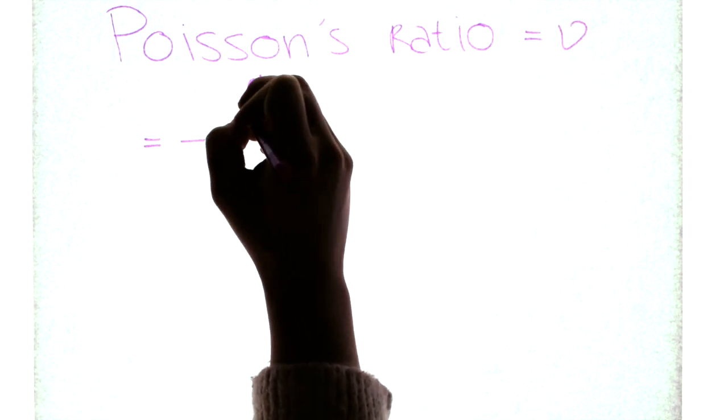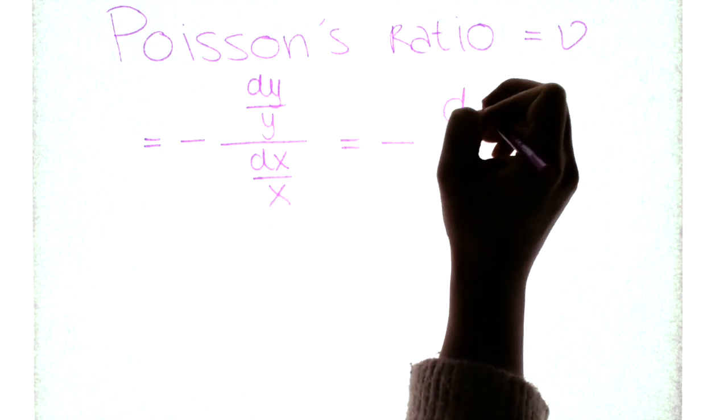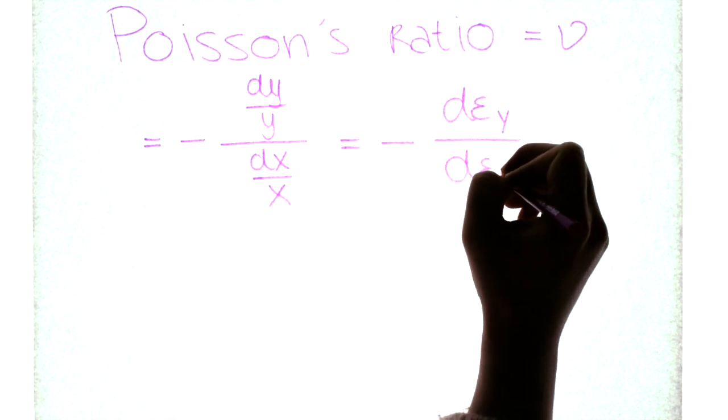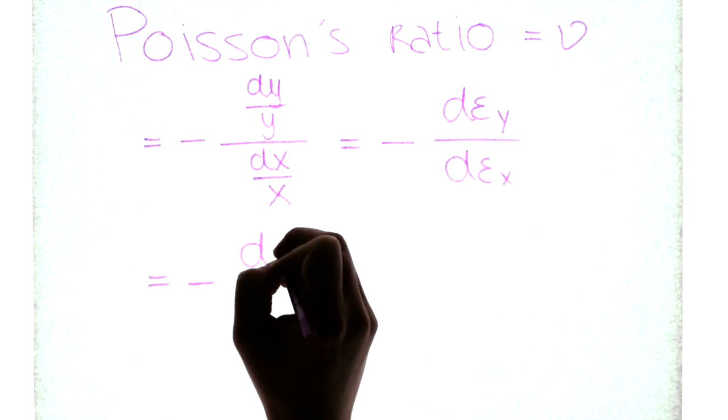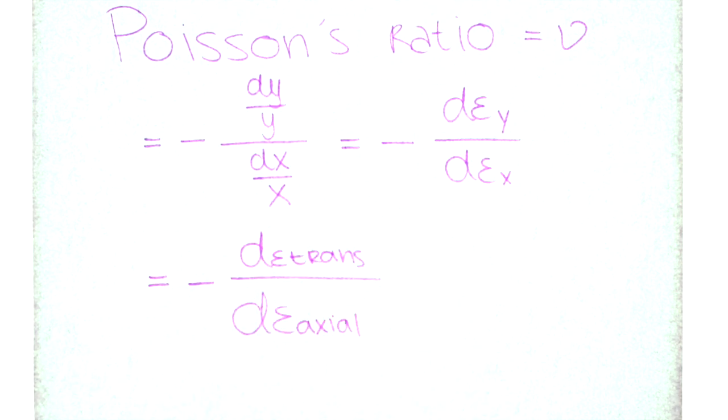as the negative ratio between the strain in the direction perpendicular to the direction of compression and the strain in the direction of the compression. This is equal to saying that the Poisson's ratio is the ratio between the transverse strain and the axial strain.